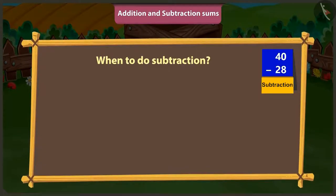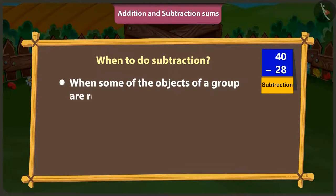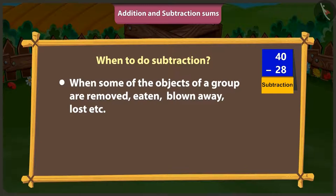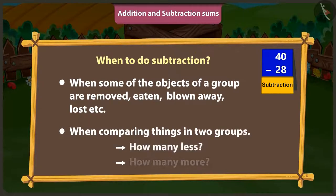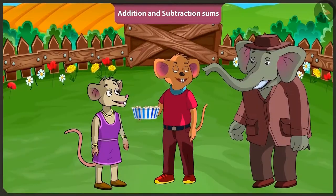And when to do subtraction? When some of the objects of a group are removed, eaten, blown away, lost, etc., then we have to do subtraction. And when comparing things in two groups — how many less or how many more — to know all that, we also have to do subtraction.